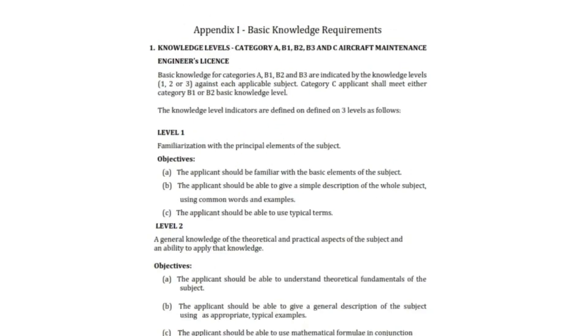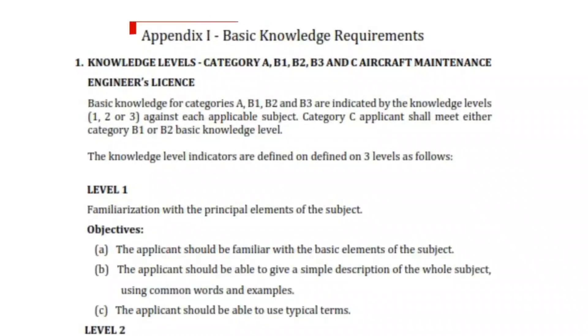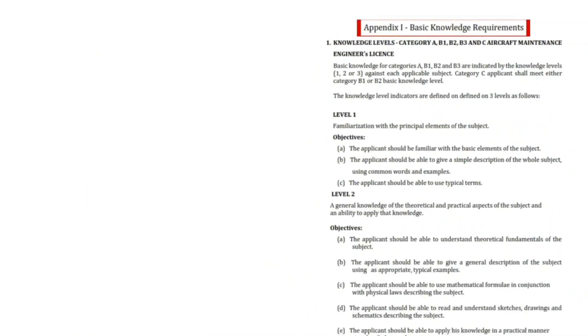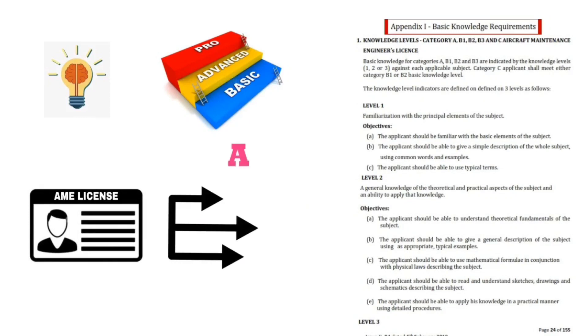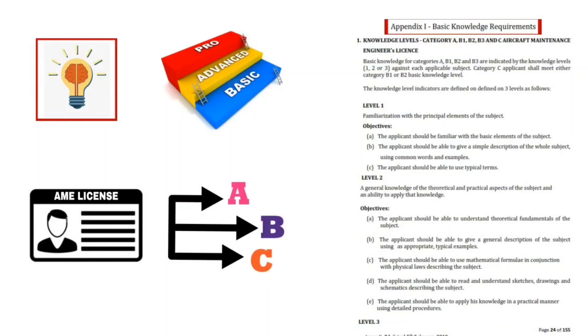Appendix 1: Basic Knowledge Requirement. This appendix covers the level of knowledge requirement for different categories. As we know, AME license is in three categories: A, B, and C. We will now see what the knowledge requirement is for these categories.